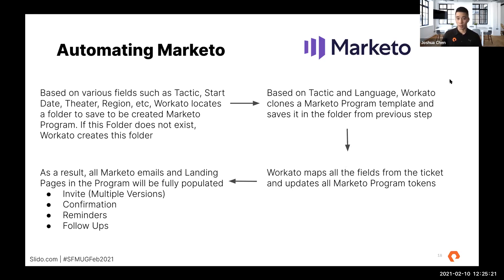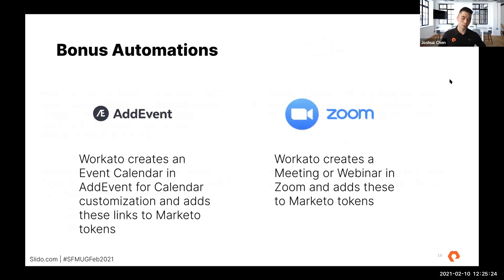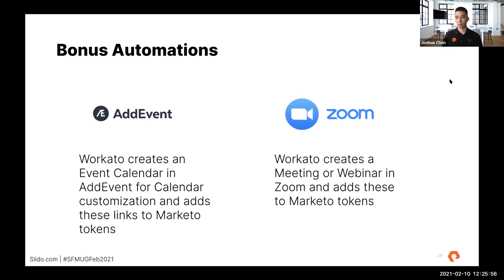Once all that is ready, we have some bonus automations. We use AdEvent, which is a really cheap calendar customization tool that allows you to create a calendar event. It generates different links that you can bring back into Marketo, so folks can add events to their calendar of choice — whether it's Google, Outlook, Microsoft, or Apple. We connected Workato with AdEvent and built out this event, then added it to tokens within Marketo so it populates on emails as well.